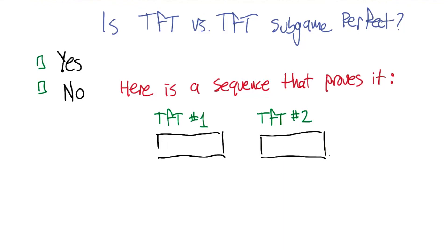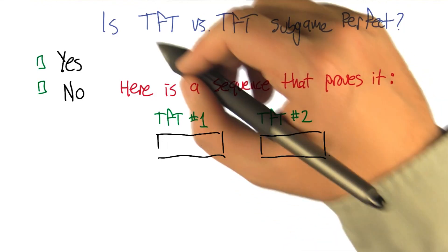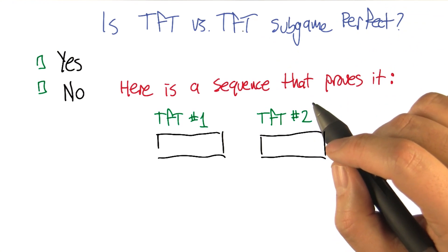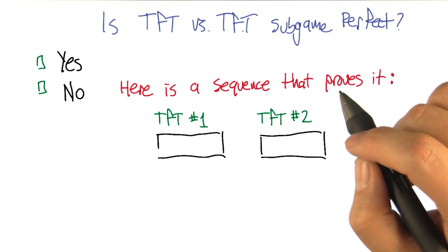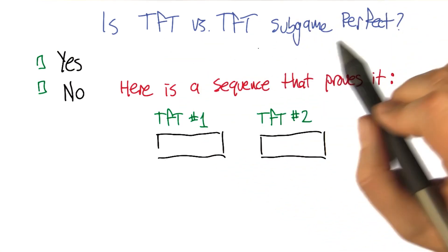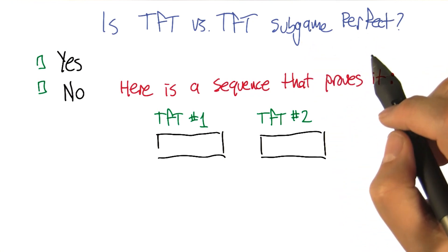All right, so let's make sure that we get this concept. Let's evaluate tit for tat versus tit for tat, spy versus spy, and ask whether or not they are subgame perfect or in a subgame perfect equilibrium with each other.